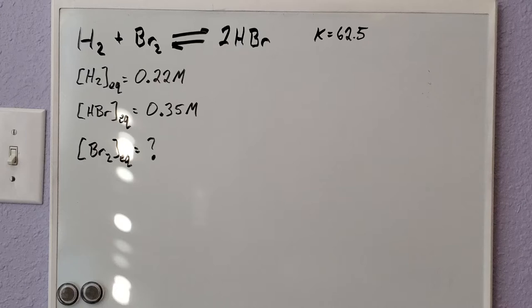The equilibrium concentration for H2 gas is 0.22 molarity, the equilibrium concentration for HBr gas is 0.35 molarity, and I want to solve for the equilibrium concentration of Br2. The first thing you should do with these types of problems, especially if they mention K, is write out your equilibrium expression.